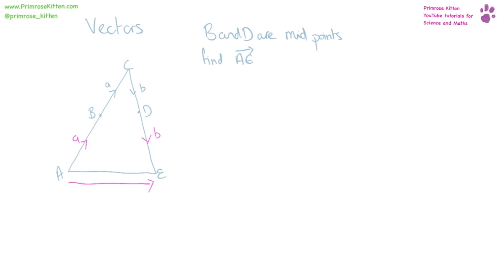So if we want to go from A to E we can't do it directly, but we can do it indirectly by going this way and then back down this way. We start in the same place and end in the same place — we are going from A to E, which is what the question asks us to do. It doesn't tell us we have to do it in the most direct way; we can do it by going the way that we know how to do.